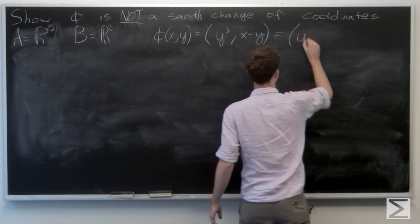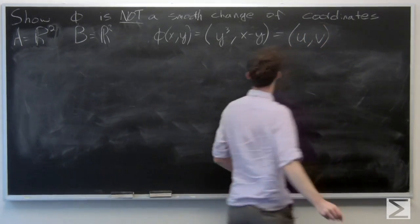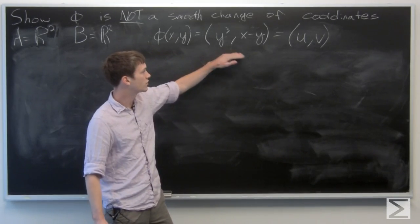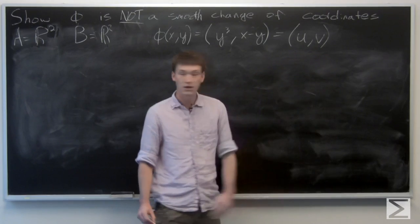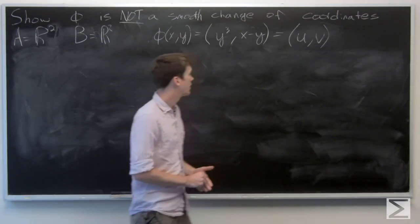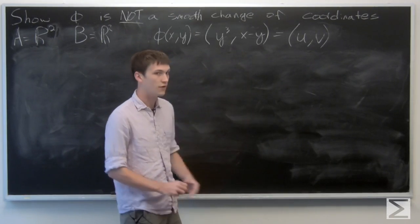We'll let our function be defined as going to some set of points (u,v) in B, and we'll try to explicitly solve for x and y.